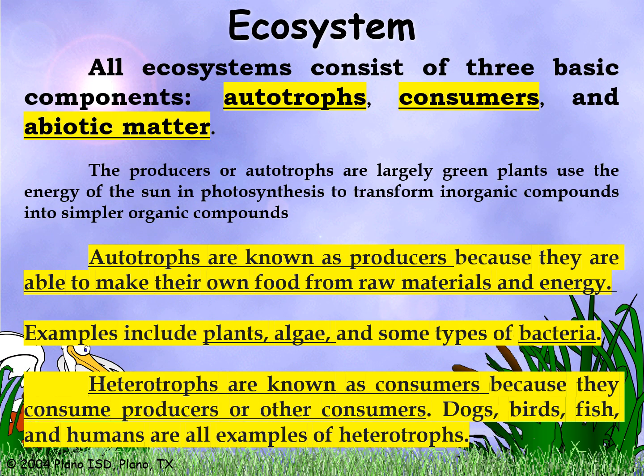An ecosystem consists of three basic components: the autotrophs, the consumers, and abiotic factors.